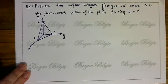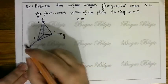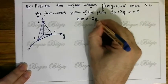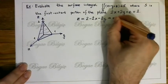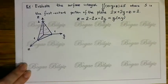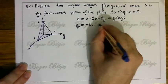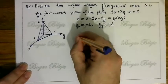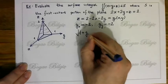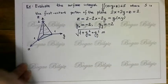Begin by writing S as z = 2 - 2x - 2y. This is the G(x,y) function in the theorem. Using the partial derivatives, Gx = -2 and Gy = -2. Therefore, 1 + Gx² + Gy² = 1 + 4 + 4 = √3 ... that is, √(1 + Gx² + Gy²) = √3.